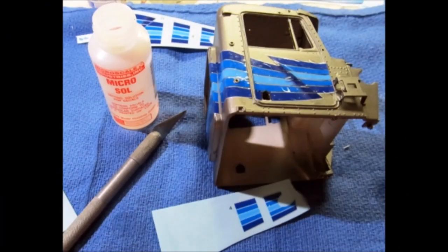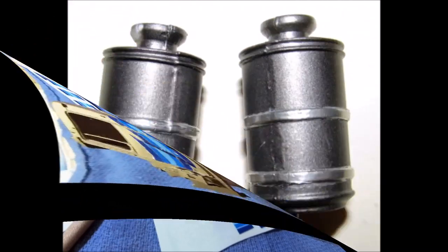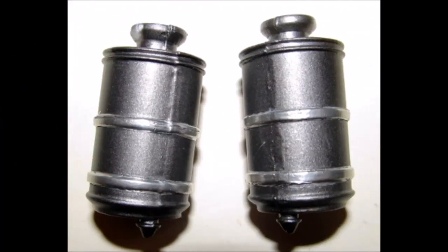After the base coat has cured, you can decal your body using plenty of warm water. Make sure that you start with the larger or more delicate decals first. And I strongly recommend the use of some setting solutions to help them adhere and follow body contours. The only parts on the body that needed some chrome were the straps on the filters. So I used some foil here and applied it like tape and then trimmed off the excess with a sharp hobby knife.